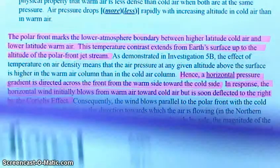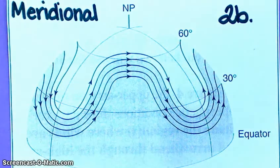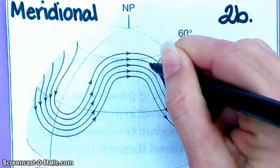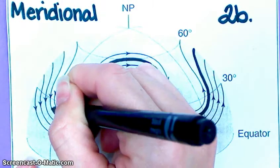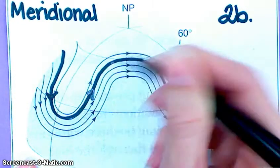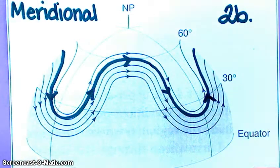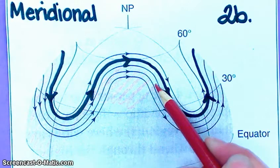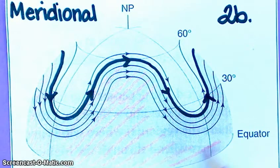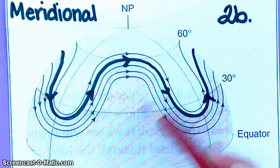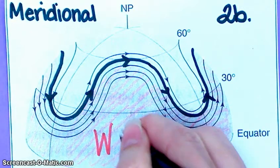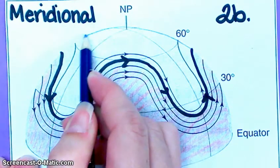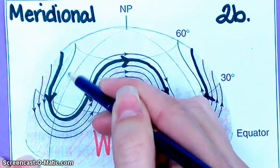We also see it on the meridional image that they gave us. Warm air is down here — makes sense because it's closer to the equator — and your colder air is up here, closer to the poles.